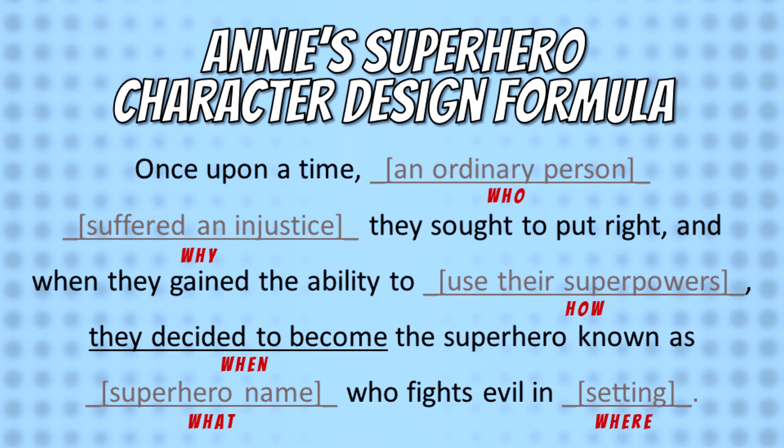Once upon a time, an ordinary person suffered an injustice they sought to put right, and when they gained the ability to use their superpowers, they decided to become a superhero, known as superhero name, who fights evil in a specific setting. This answers the who, why, how, when, what, and where of your character and story idea.